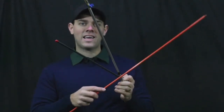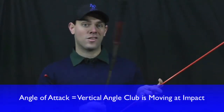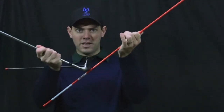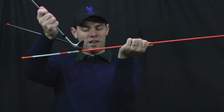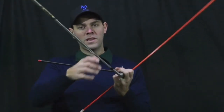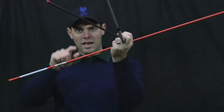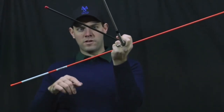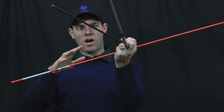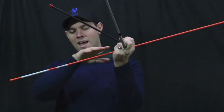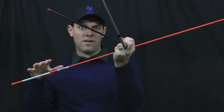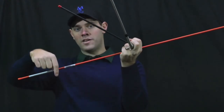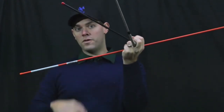The angle of attack is the angle that the club is coming into the ground. That club could be coming down very steeply, or it could be coming in very shallow. The spin loft is the difference between those two — it's basically this gap here. So let's say for this shot, I've got a dynamic loft of about 45 degrees and I'm hitting down about 5. So 45 degrees minus negative 5, because hitting down is negative, is a spin loft of 50 degrees.